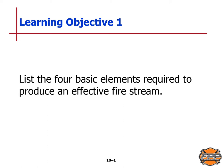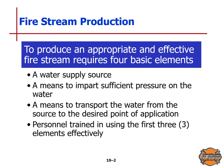Now we'll start with learning objective one: list the four basic elements required to produce an effective fire stream. To produce an appropriate and effective fire stream requires four basic elements — a water supply source, a means to impart sufficient pressure on the water, a means to transport the water from the source to the desired point of application, and fourth, personnel trained in the use of the first three elements effectively.